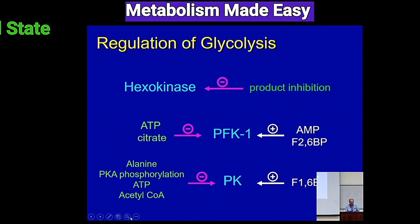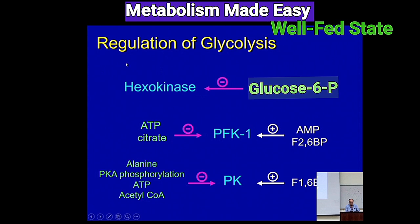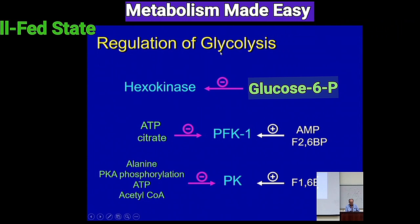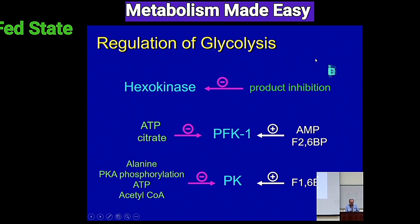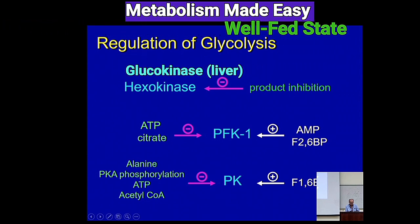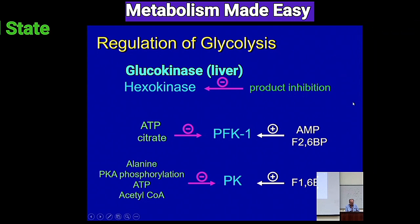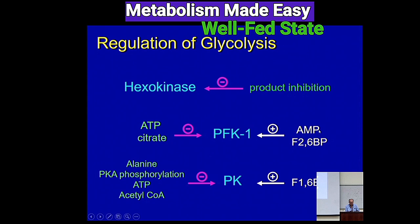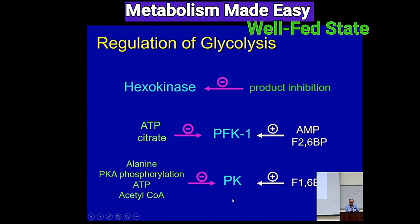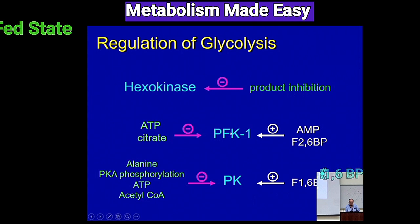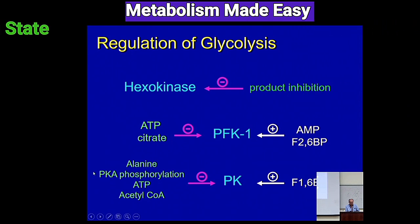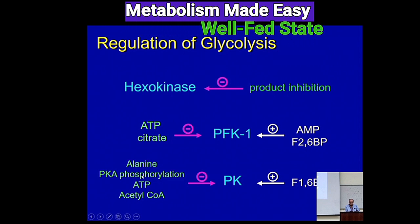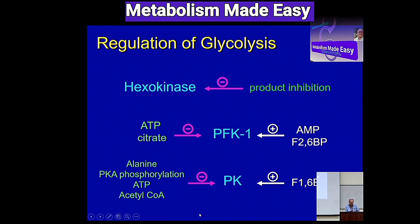Here is a quick summary of these key enzymes. Note that hexokinase is inhibited by glucose 6-phosphate, but glucokinase in the liver is not. PFK1 is activated by AMP and fructose 2,6-bisphosphate, and inhibited by ATP and citrate. Pyruvate kinase is activated by fructose 1,6-bisphosphate (the product of PFK1) and inhibited by alanine, ATP, and PKA-dependent phosphorylation, which is dependent on glucagon receptor activation.